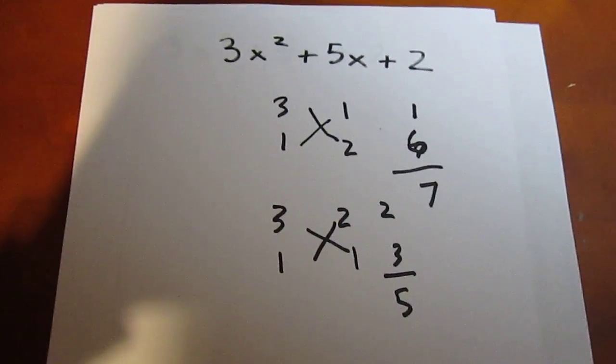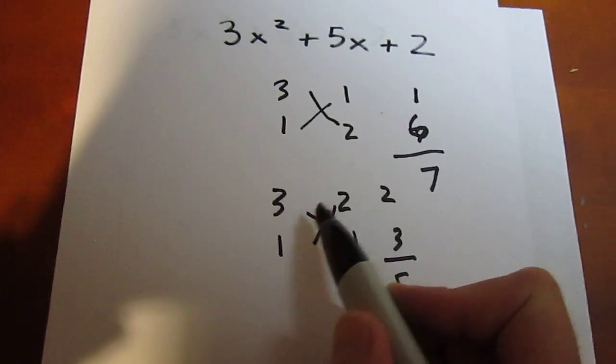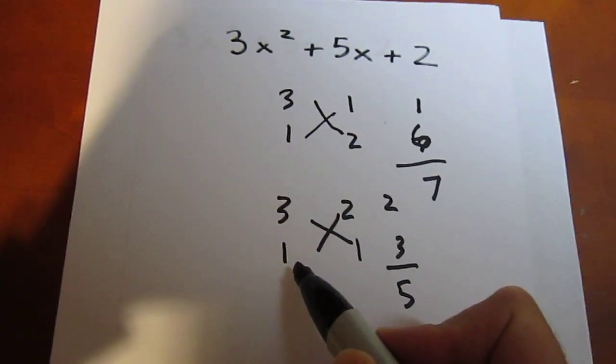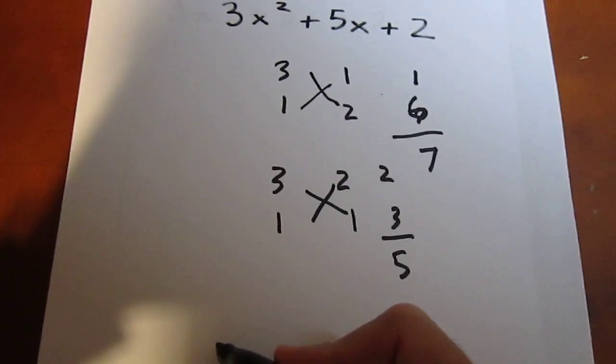Well, since I got what I wanted, I can now read directly across. The first factor is 3x plus 2. The second factor is 1x plus 1.